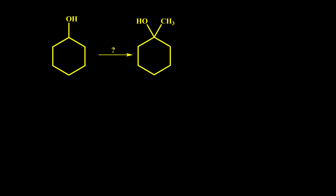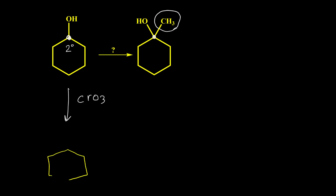Here is another example. As you can see, this carbon has one extra group in our product — a methyl group. So we have the same strategy: we need to oxidize our alcohol because it is a secondary alcohol. It really doesn't matter which reagent we use. We can use PCC, DMP, or other reagents like chromium oxide. By using one of these oxidizing agents we convert our alcohol to a ketone.